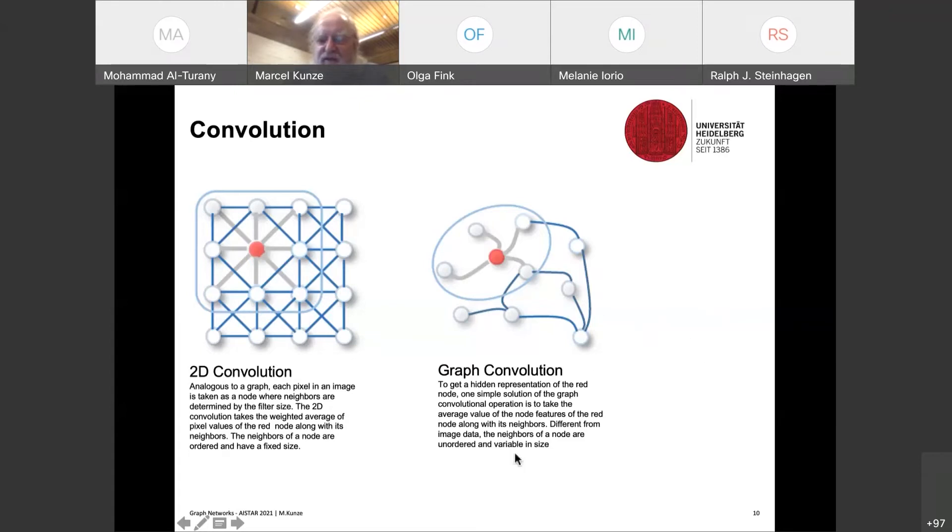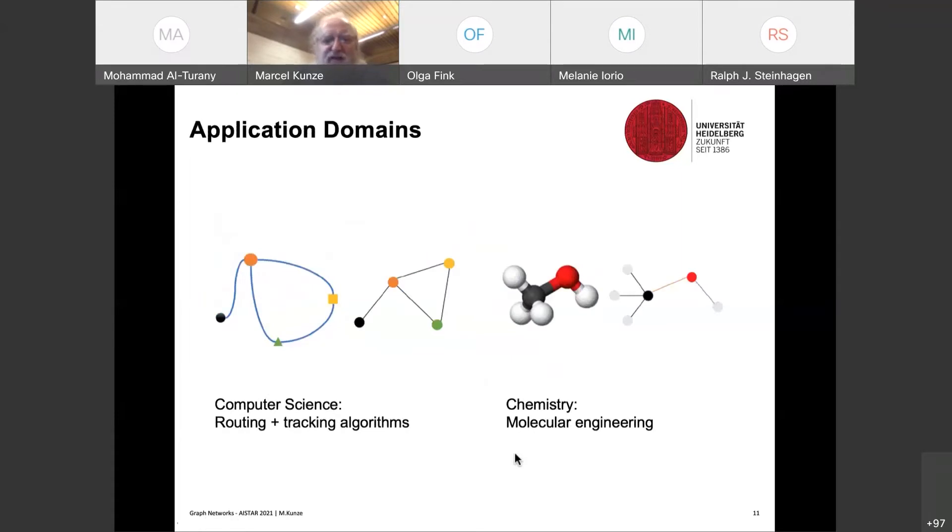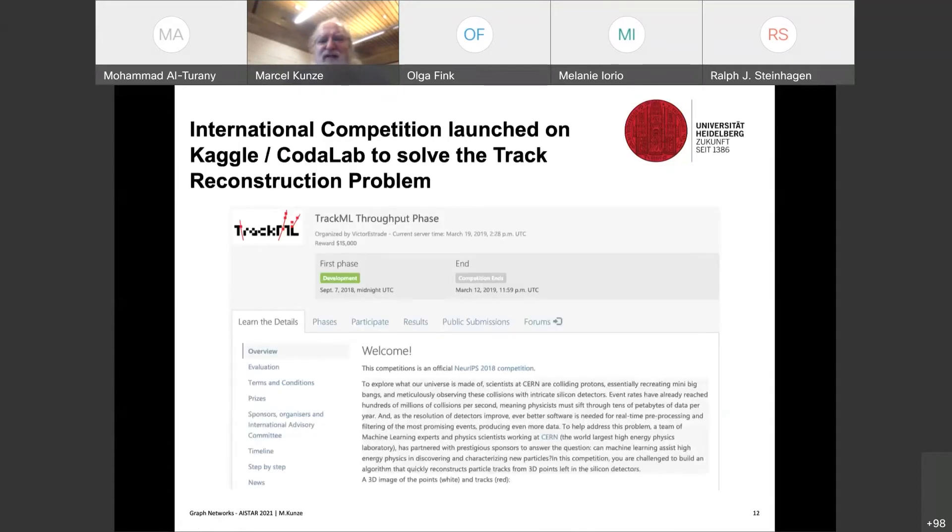The application domains of these graph networks are very wide, very broad. So in computer science, for instance, you can use these graphs or the graph networks for all kinds of routing algorithms as shown here or tracking algorithms. But for sure, you can also use them in chemistry, for instance, for molecular engineering. If you are looking for optimization of molecules or understanding of molecules, learning of molecules, then you could simply model a molecule by a graph and use this as a basis to do supervised training.